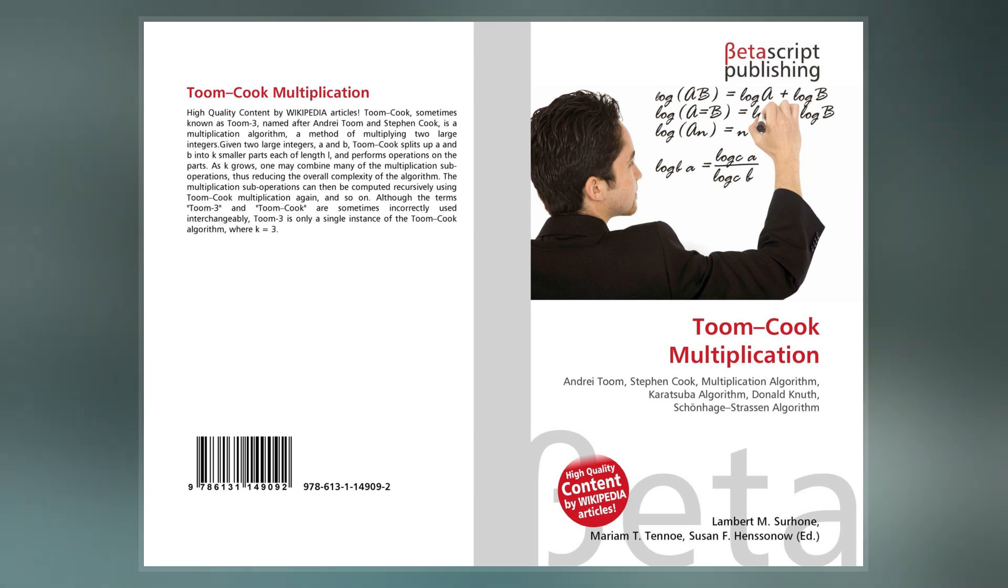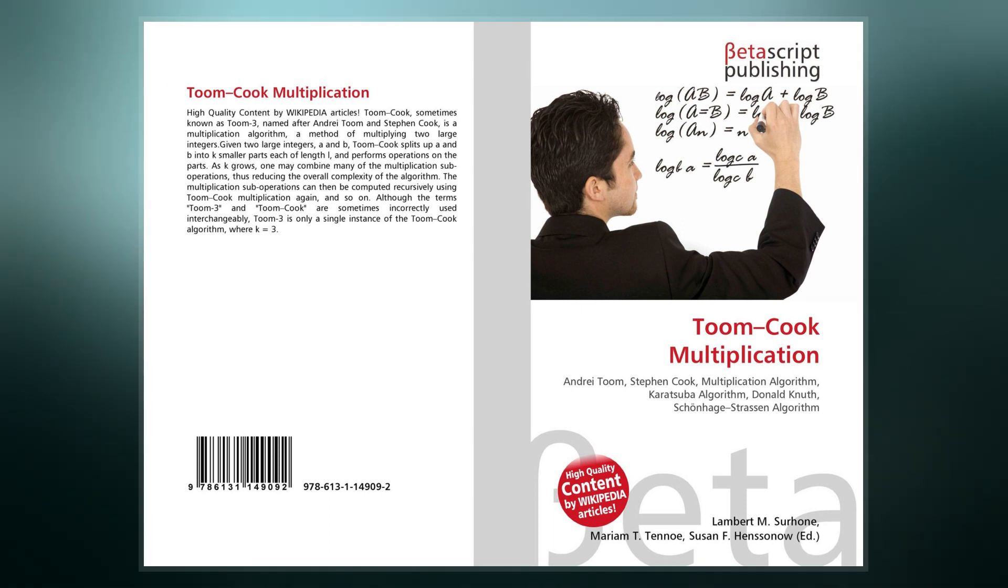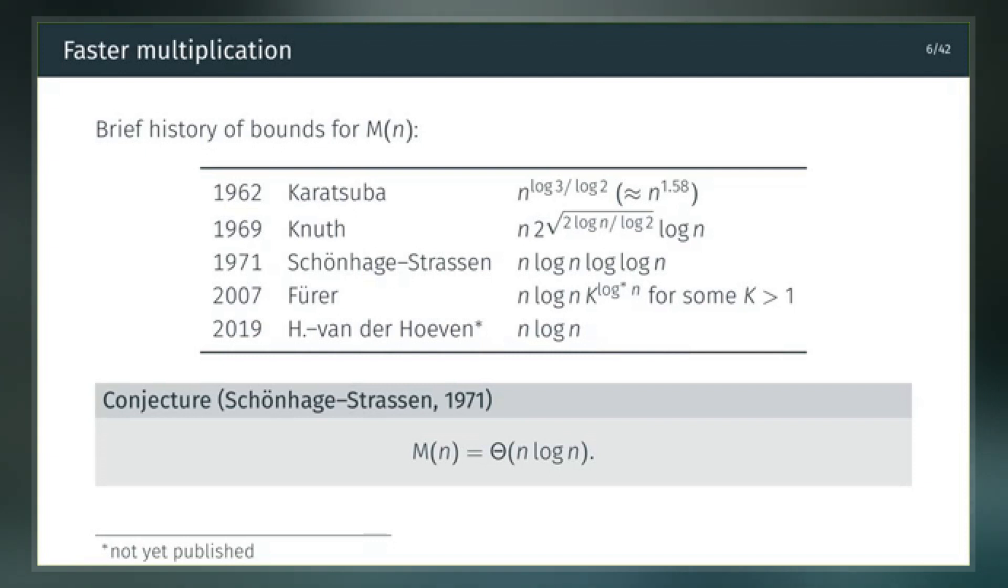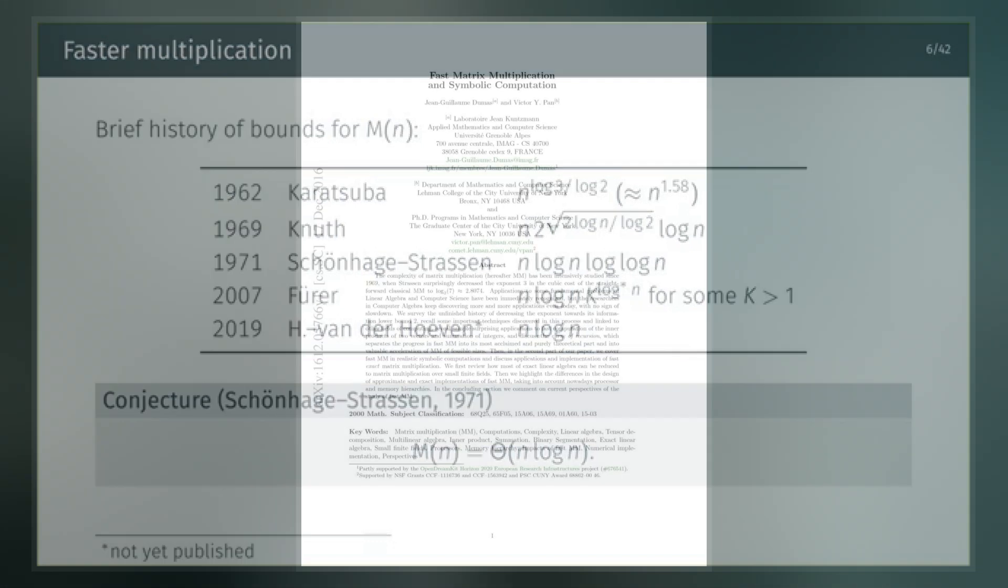The Schönhage-Strassen algorithm was the asymptotically fastest multiplication method known from 1971 until 2007, when a new method, Führer's algorithm, was announced with lower asymptotic complexity.